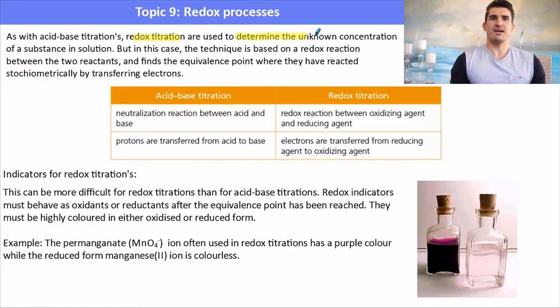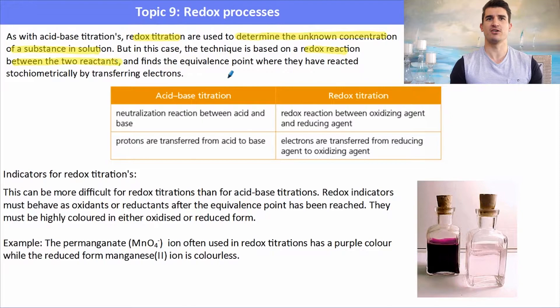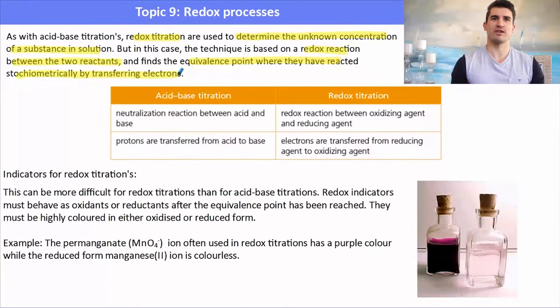So as with an acid-base titration, a redox titration uses the unknowns to determine the unknown of a substance in solution, but in this case a redox reaction between the two reactions involves an equivalence point that indicates when all of the electrons have been transferred.